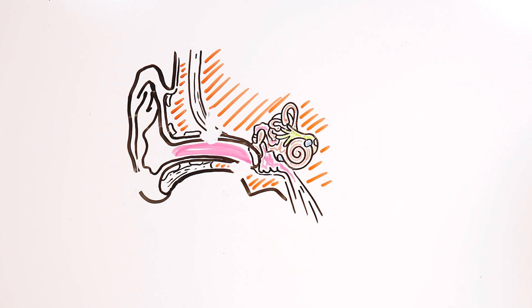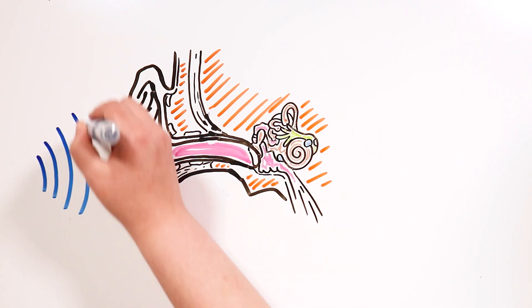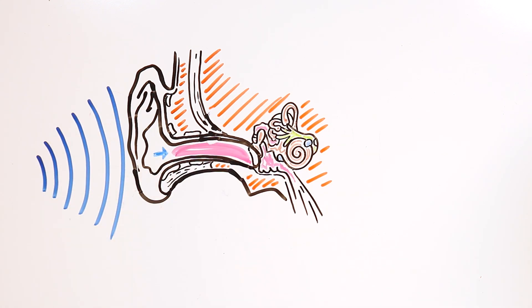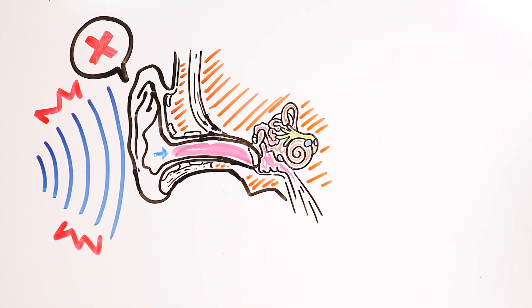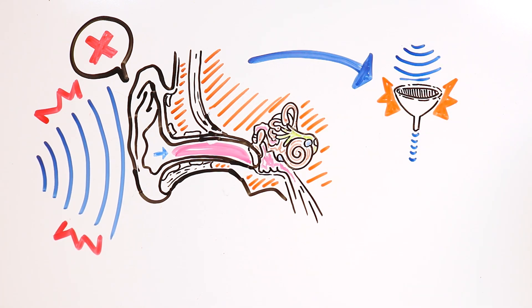The pina catches the sound vibrations in the air, and redirects them towards the ear canal. If we didn't have the pina, we wouldn't be able to detect many sounds. It acts kind of like a funnel, channeling the sound waves towards the ear canal, which is a tunnel connected directly to the eardrum.